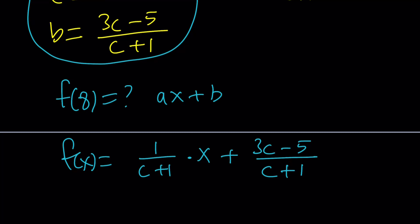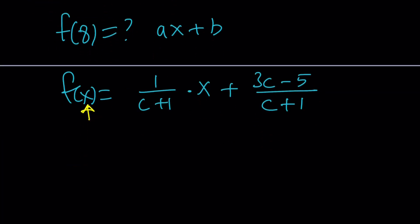But the problem is we don't know what the m and b are because they depend on c. But guess what? That's not going to matter. So let's find out. I'm going to replace x with 8 to find f(8). And that's going to give me f(8) = 8/(c + 1) + (3c - 5)/(c + 1).